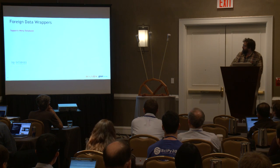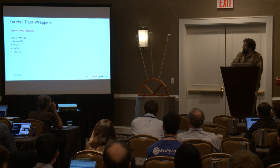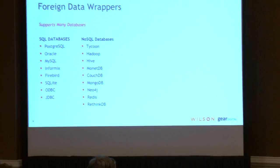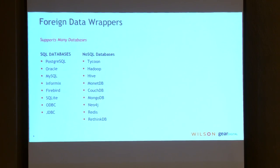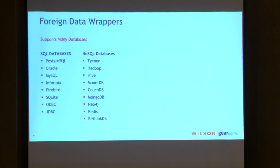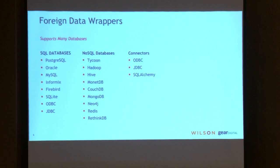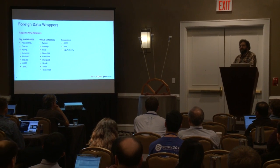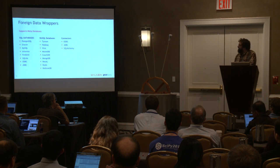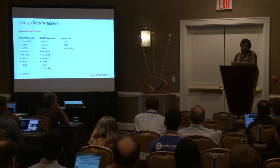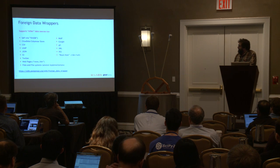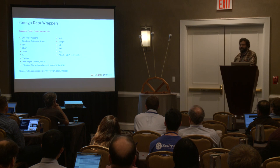The first use case is representing relational databases in your database — lots of those wrappers are already written. Then NoSQL databases: people figured out how to plug NoSQL databases in and make them look like tables in Postgres. I wrote the RethinkDB one last fall, and that's what got me started thinking about foreign data wrappers in general. And then generic connectors — ODBC, JDBC, SQLAlchemy — so anything you can talk to with those, you can pull into Postgres as a foreign data wrapper.